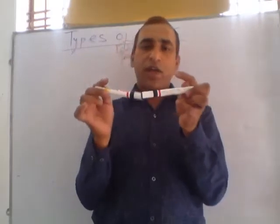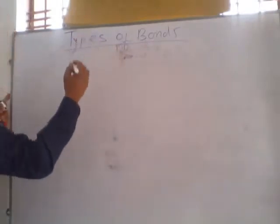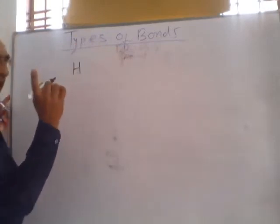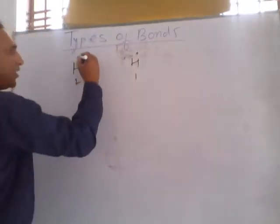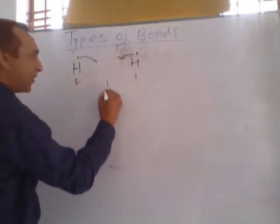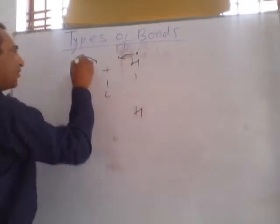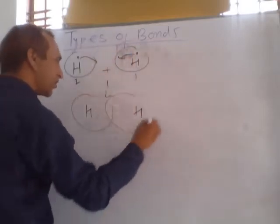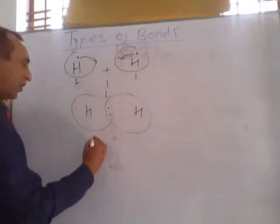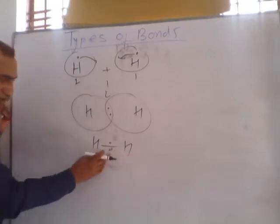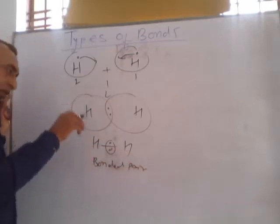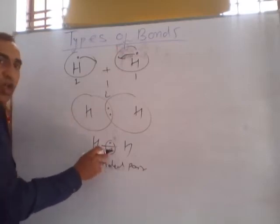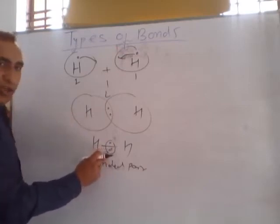A very simple example: suppose hydrogen. The atomic number of hydrogen is 1, so it has 1 electron. This is another hydrogen, also with 1 electron. Both are sharing one electron each. After the reaction, both hydrogens share their electrons — electron pair becomes two — and this type of bond is formed. This is called a bonded pair, BP. Bonded pair means the pair of electrons used in the formation of the bond. So this bond is called covalent bond.